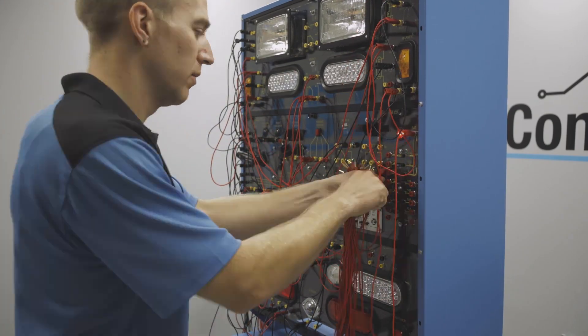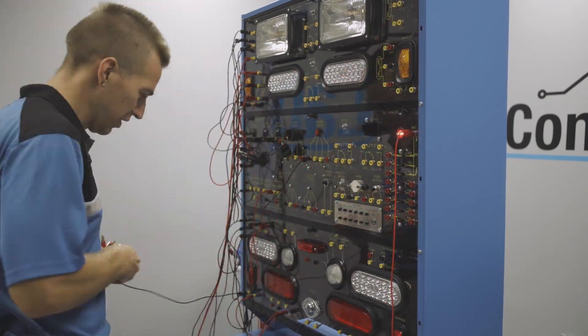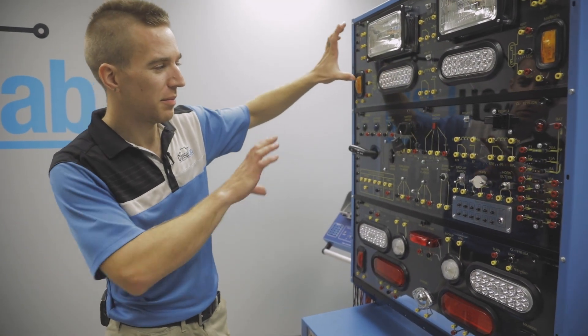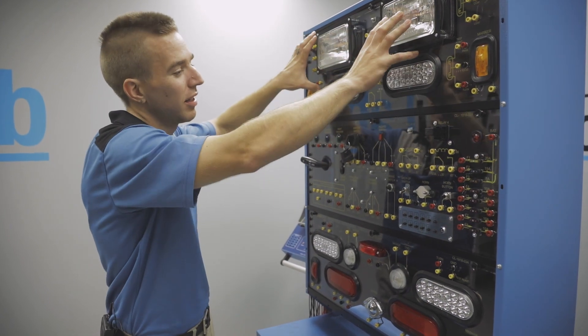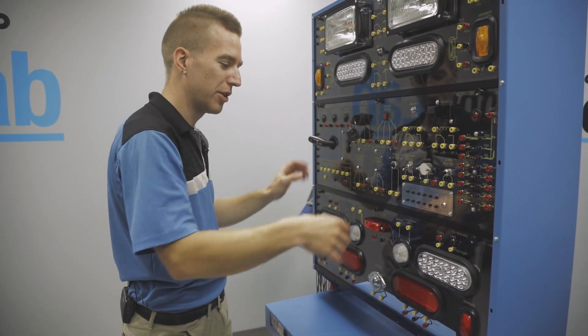We've removed all the wiring from the trainer so we can see the details a little bit more. I want to talk about some of those details because the trainer is made of three different components: we've got the headlights and all the front lights up here, the rear lights down here, and then all the switchgear.